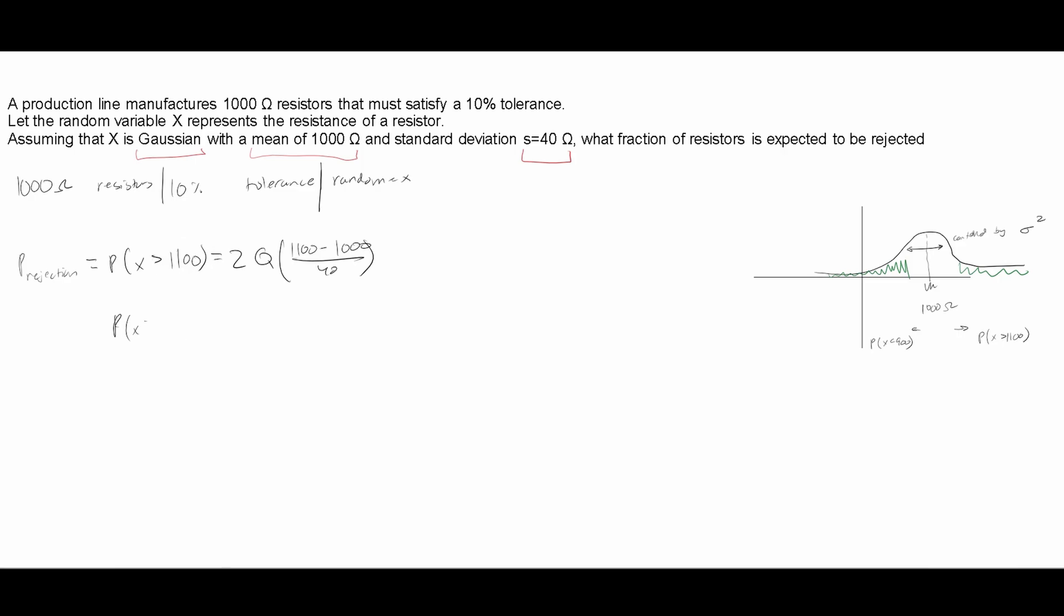Probability of X greater than some value is equal to Q, and then here we have our X minus the mean. X is going to be like this value that we have here, our mean. And this is going to be over a standard deviation like this.